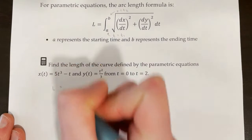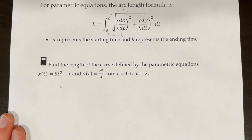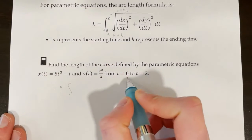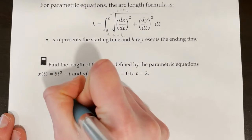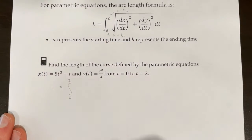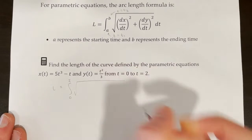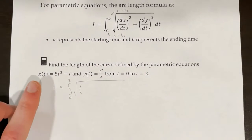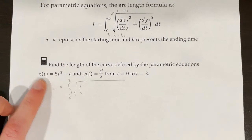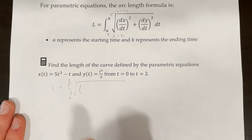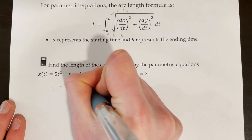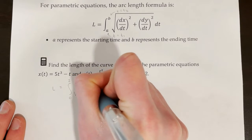Since this is a calculator question, we just need to set up the problem and let the calculator do the integrating. The length equals the integral from 0 to 2, since those are our starting and ending times. Under the square root, we need dx/dt — the derivative of x with respect to t. We have 5t³ − t, so the derivative is 15t² − 1.